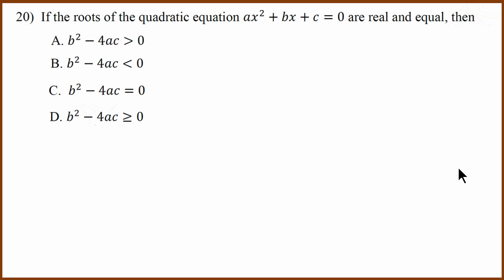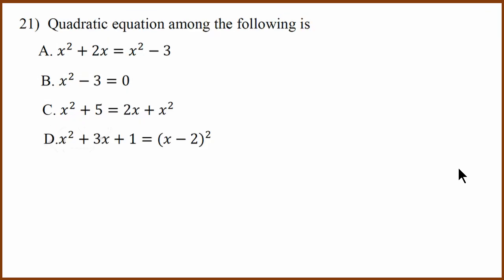Twentieth question: this is a formula question. For roots to be equal, what is the discriminant? The discriminant equals 0. Twenty-first question: which ones are quadratic equations? Options 1, 3, and 4 are not quadratic because x squared cancels out. The correct answer is x squared minus 3 equals 0. Answer B.